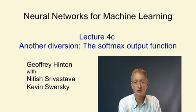In this video we're going to look at the softmax output function. This is a way of forcing the outputs of a neural network to sum to one so that they can represent a probability distribution across discrete mutually exclusive alternatives.